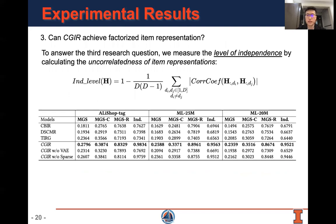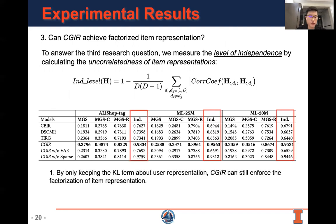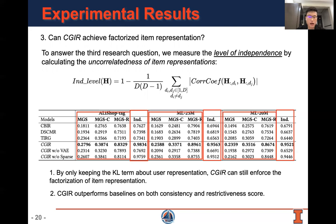To answer the third research question, we measure the level of independence by calculating the uncorrelatedness of item representation using the following equation. From the experiment, we can get the following conclusions. First, by only keeping the KL term about user representation, CGR can still enforce factorization of item representation. Second, CGR outperforms baselines on both consistency and restrictiveness score.